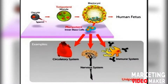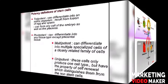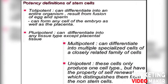Totipotent cells can form any cell of the embryo as well as the placenta. In the pluripotent stage, cells can differentiate into any tissue type except placental tissue. In the multipotent stage, cells can differentiate into multiple specialized cells of a closely related family of cells.